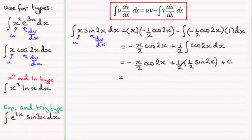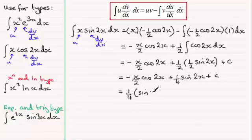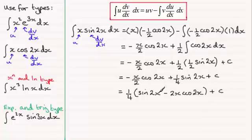Tidying up, the first term is minus x over 2 cos 2x. Multiplying out the second term gives a quarter sine 2x, plus the constant of integration c. You might want to clean this up further — for instance, pulling out a quarter. If you pull out a quarter, this term becomes sine 2x, and for the half x term, it becomes minus 2x cos 2x, giving fewer fractions. That's one example.